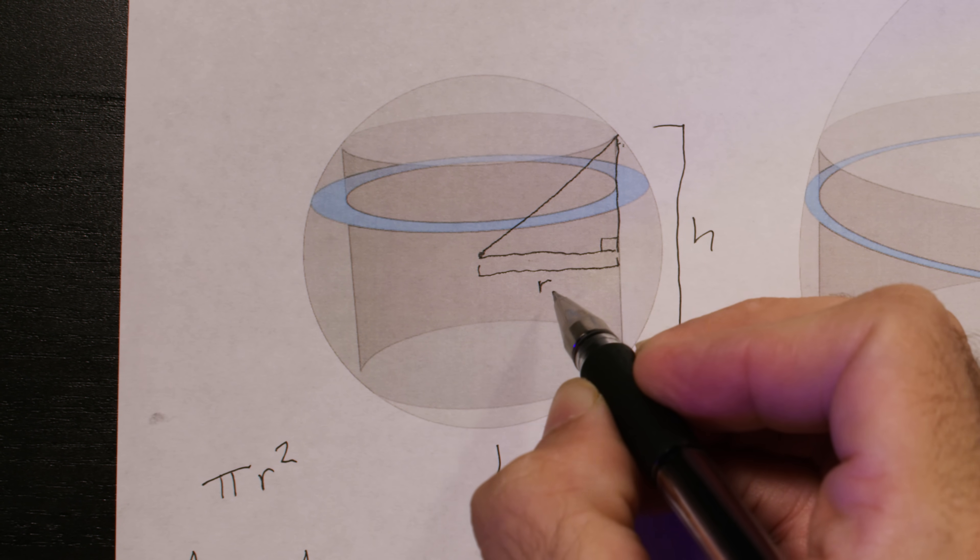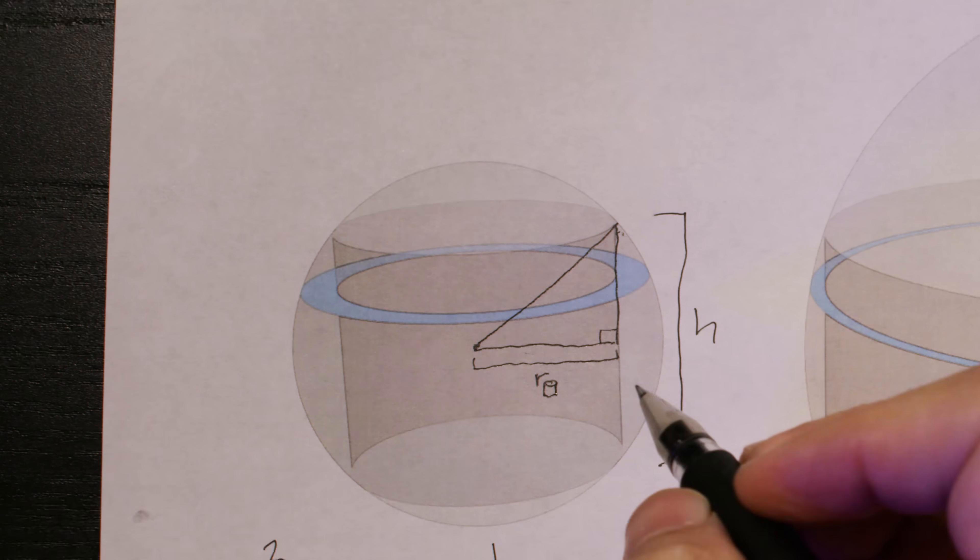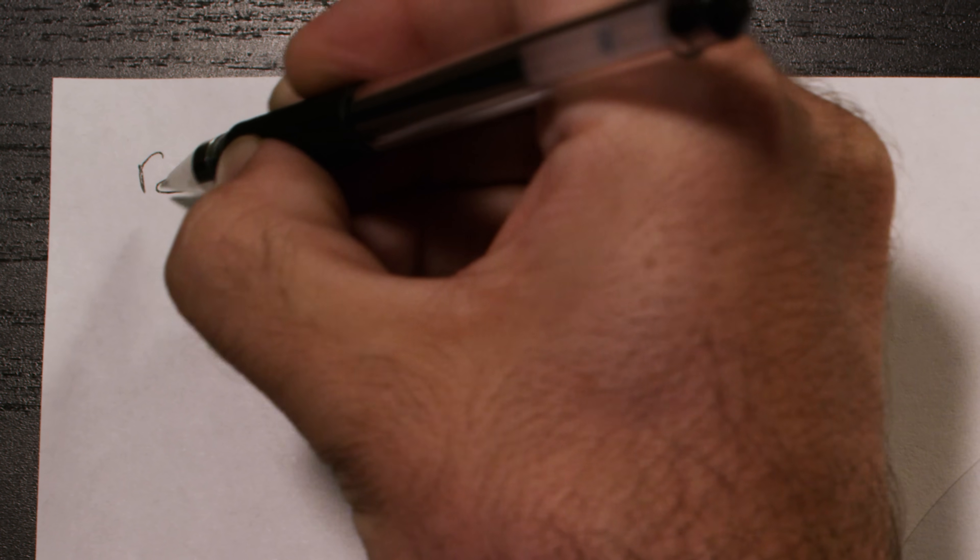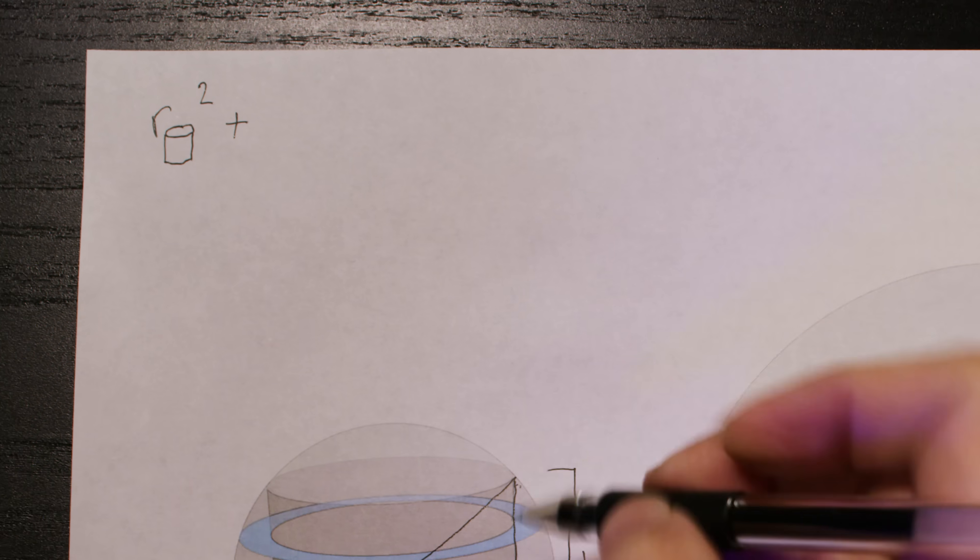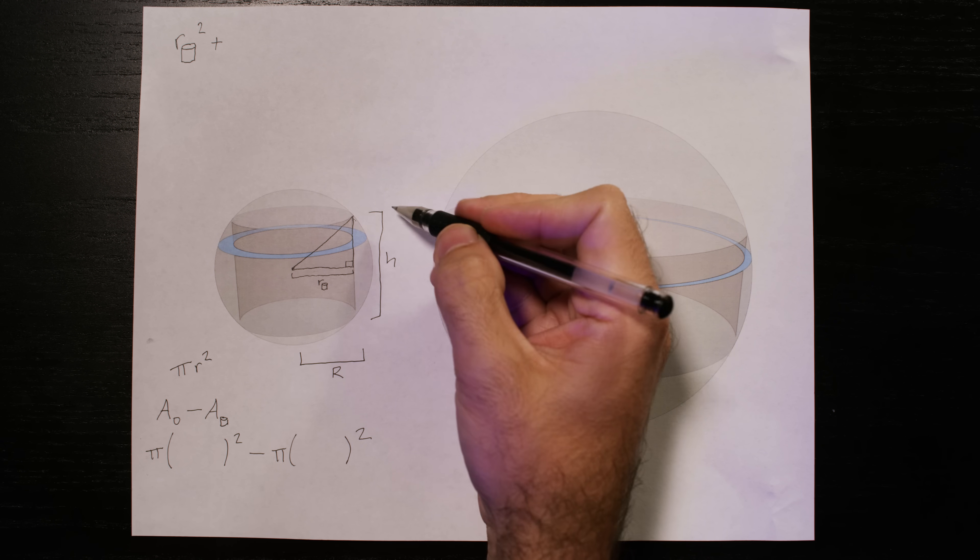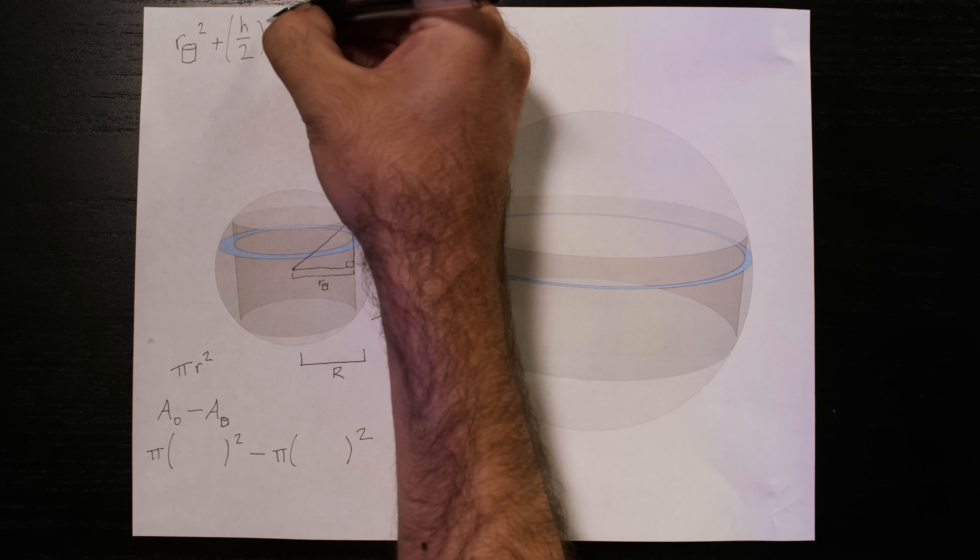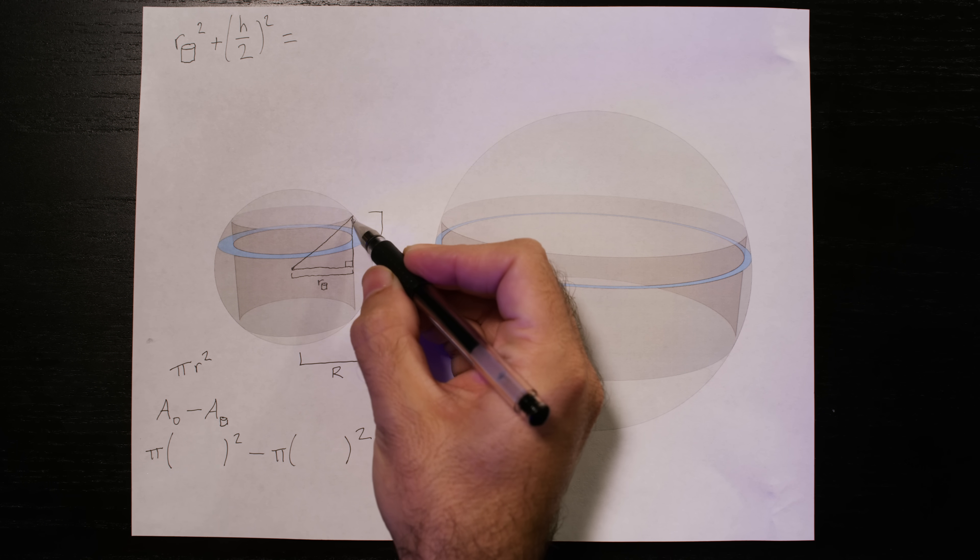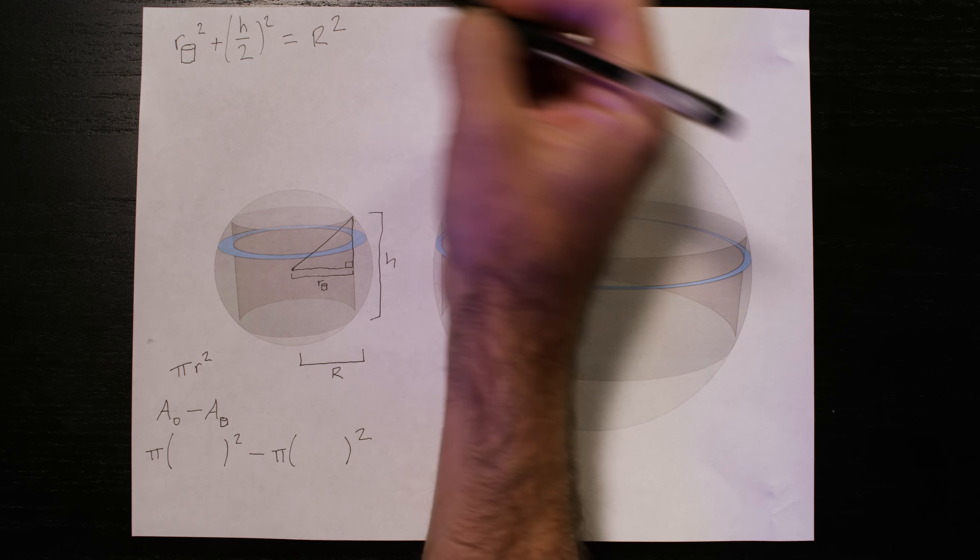So we'll call this the little r, radius of the cylinder. Beautiful little picture there. So the radius of the cylinder squared plus this side length, which is just half the height of the cylinder, so the height of the cylinder divided by 2 squared equals the hypotenuse squared. The hypotenuse happens to be the radius of the sphere itself, which is capital R. Perfect.